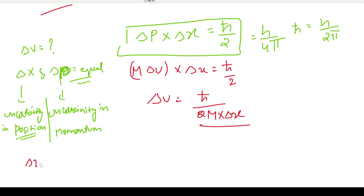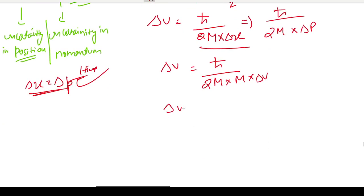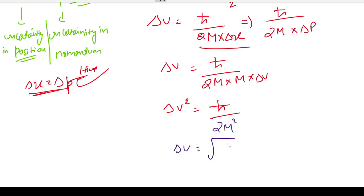Since Δp = Δx (given), and Δp = m·Δv, substituting Δx with Δp gives Δv² = ħ/(2m²), so Δv = √(ħ/2m²), which simplifies to (1/m)·√(ħ/2). Now substituting ħ = h/2π, we get Δv = √(h/(4πm²)).